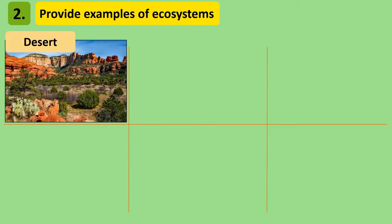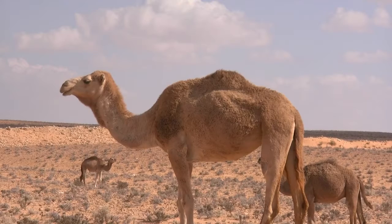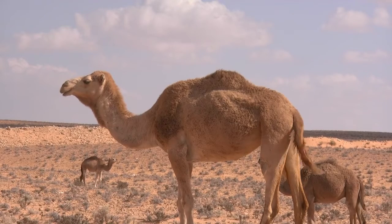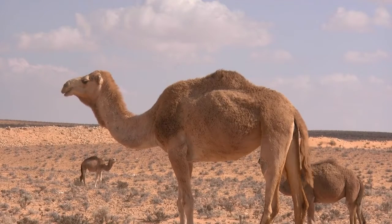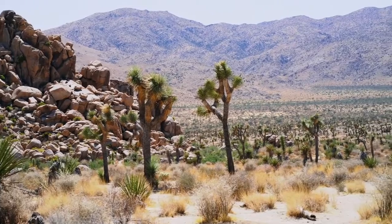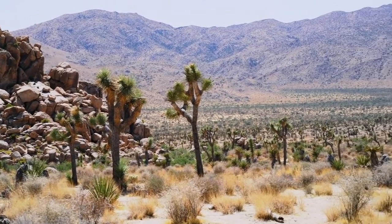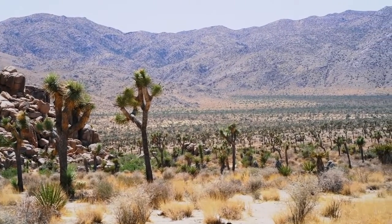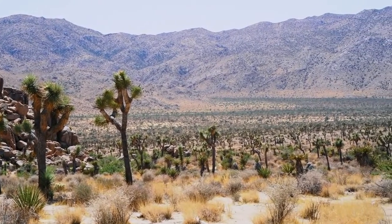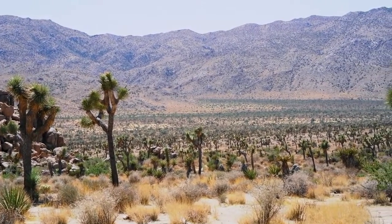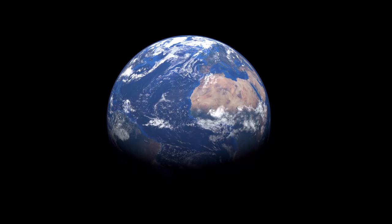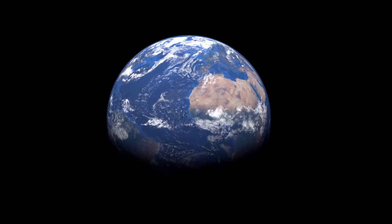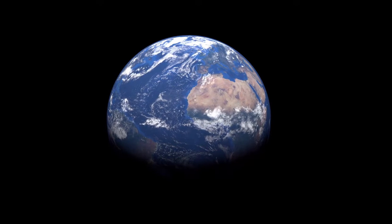Desert ecosystems can be found in many places across the globe. Some deserts are hot and sandy, others are rocky, but what deserts have in common is that they're very dry. So plants and animals here need to be able to withstand this harsh environment. The Sahara is the largest hot desert on earth.